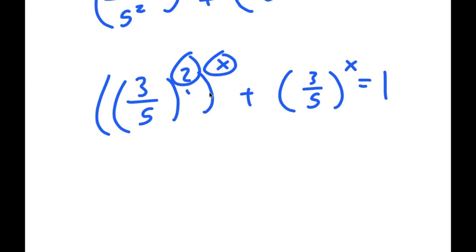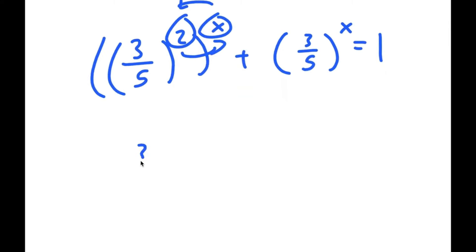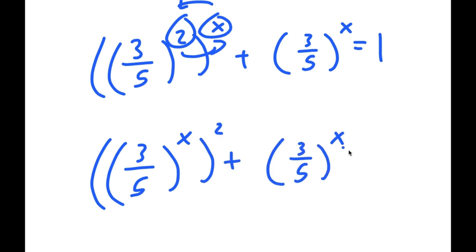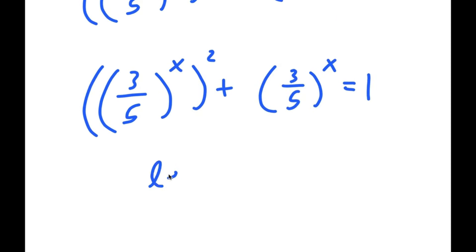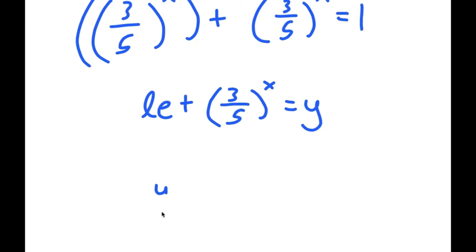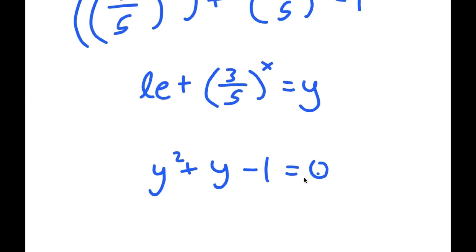Now I can swap the places of these, so I get 3 over 5 to the power of x, squared, plus 3 over 5 to the power of x is equal to 1. From here, I'm going to let 3 over 5 to the power of x equal to the variable y. So now I have y squared plus y minus 1 equals 0.